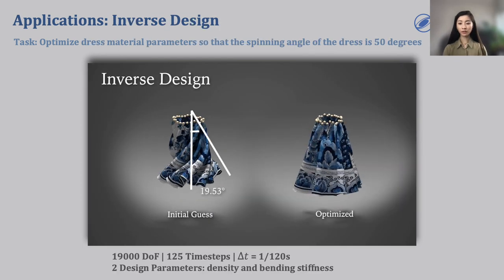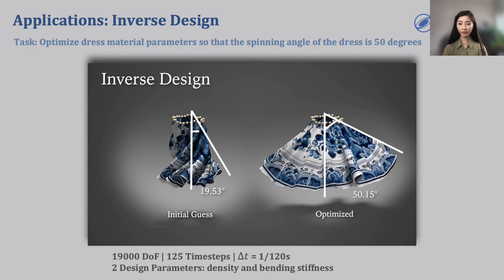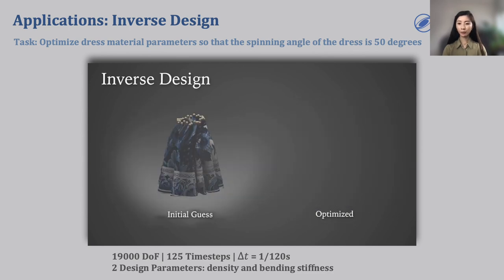Inverse design of garments is another area that can benefit from differentiable simulation. In this task, we aim to optimize the dress material parameters so that after spinning, the bottom of the dress reaches certain heights. The design parameters are the density and the bending stiffness of the dress. This task involves a simulation with frequent self-collision events that creates the wrinkles and folds of the dress. Our experiments show that gradient information can still be very helpful under many collision events.